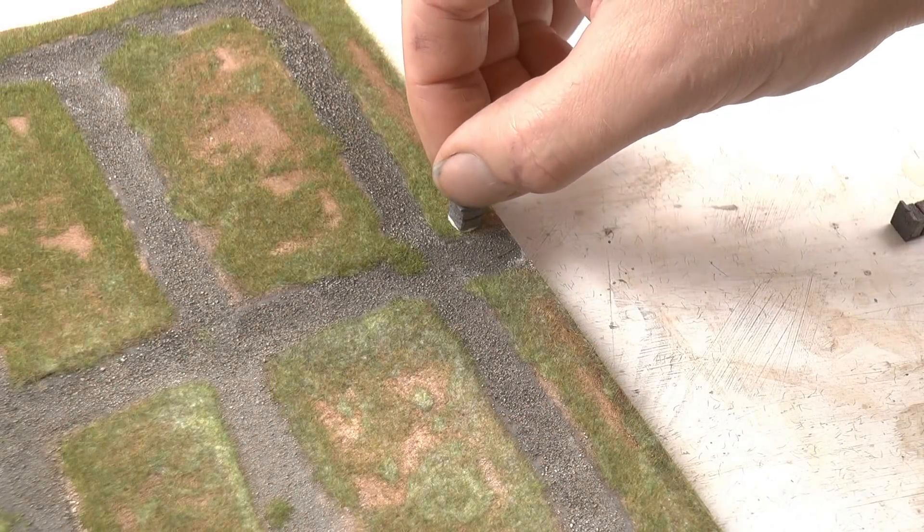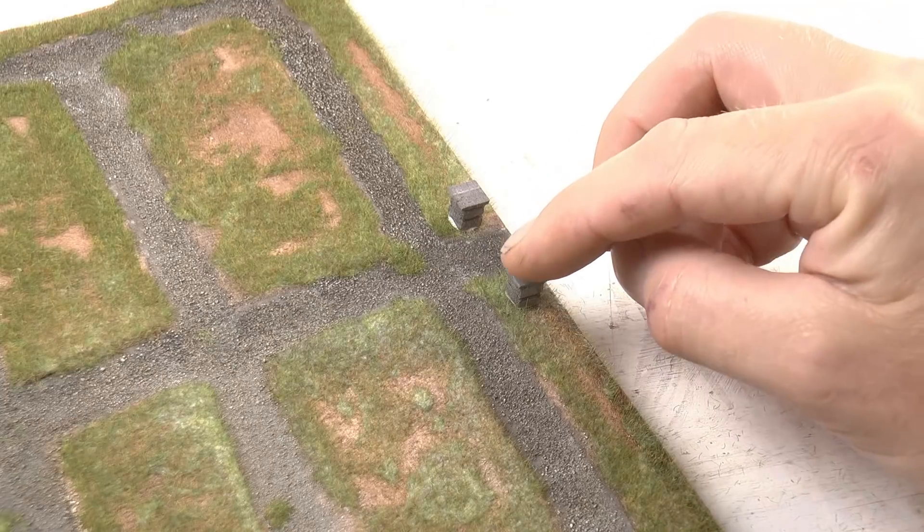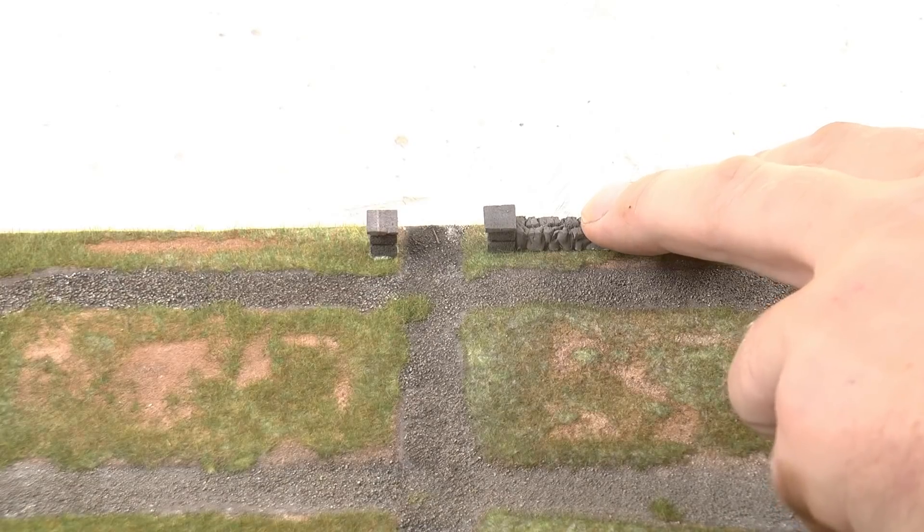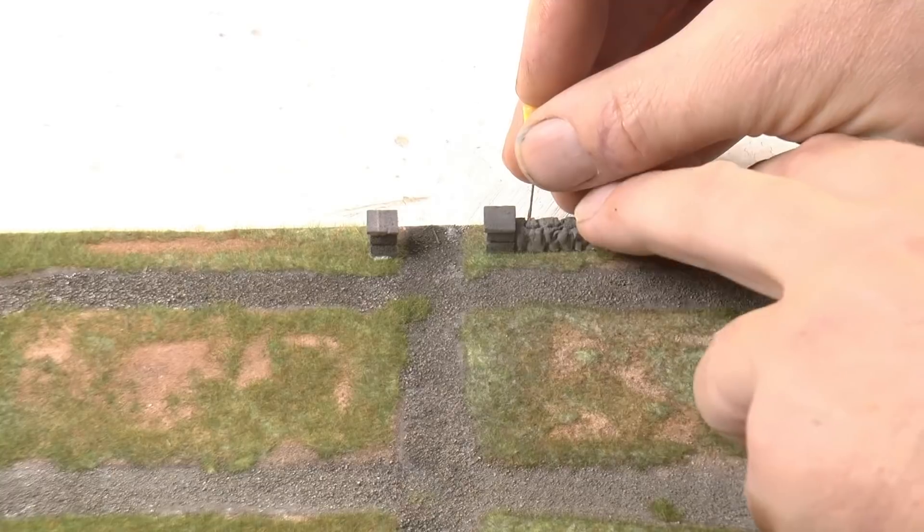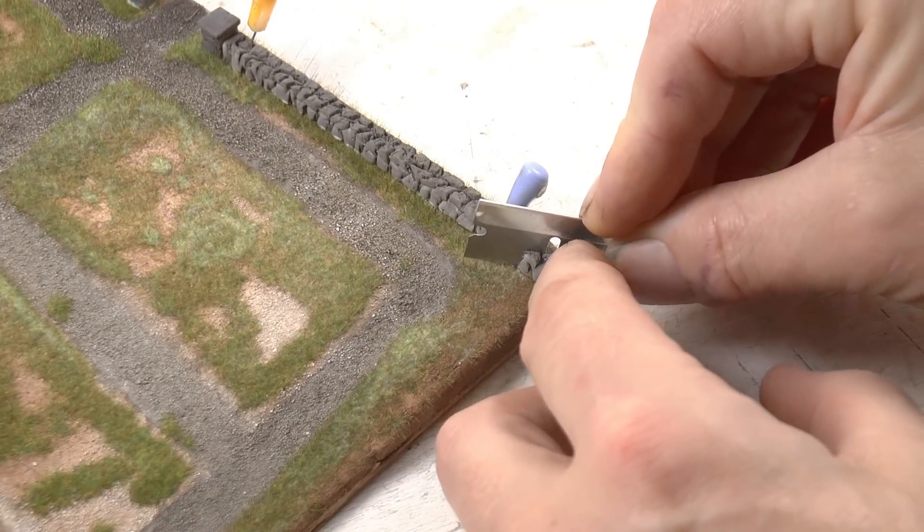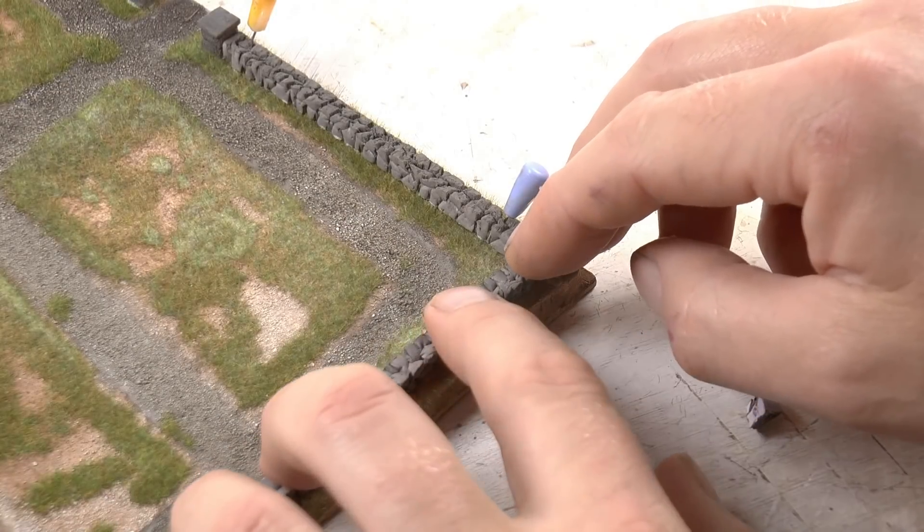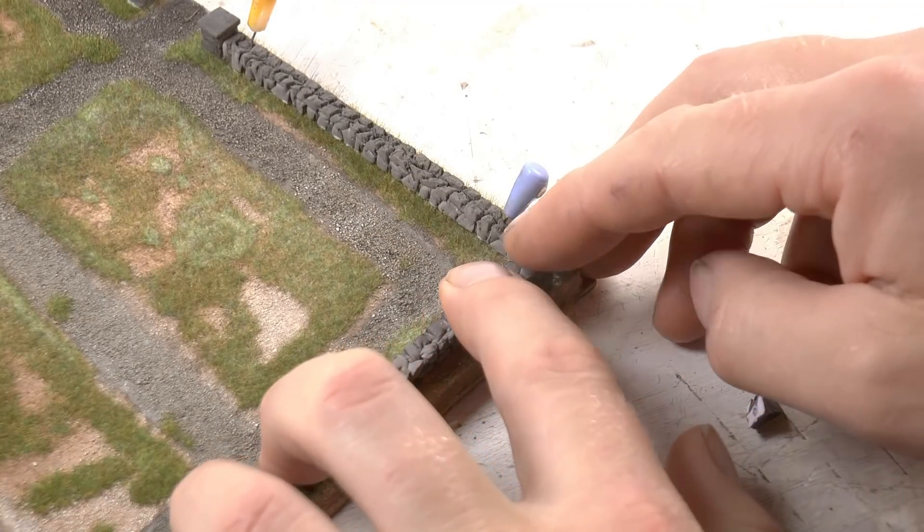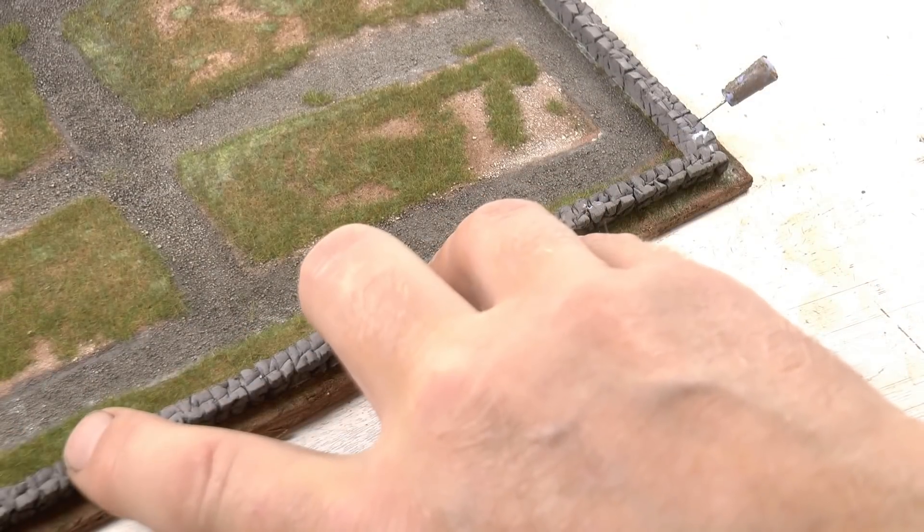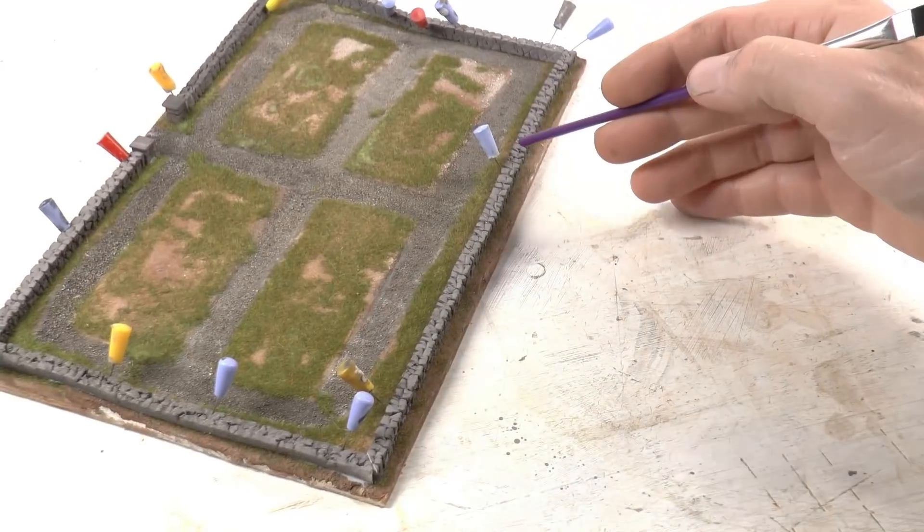We can now start to work on the details. I'm starting by gluing the pillars at the entrance in place first. After that I'm gluing the stone walls which surround the church yard or graveyard in place. I glue them as well using PVA glue and I fix them with pins until the glue has set. So then it looks like this. Now it starts to look pretty good.